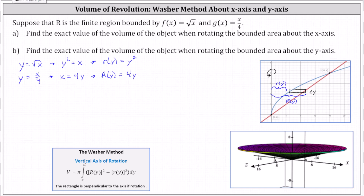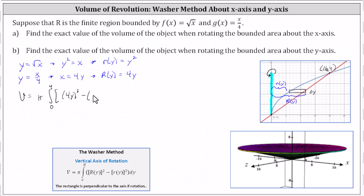The volume of the solid when rotating about the y-axis is V equals pi times the integral. Because we're integrating with respect to y and the point of intersection is (16, 4), we integrate from y equals zero to y equals four. The integrand is the square of big R(y), which is the square of 4y, minus the square of little r(y), which is the square of y squared, dy. Simplifying: the square of 4y is 16y squared, minus the square of y squared is y to the fourth.